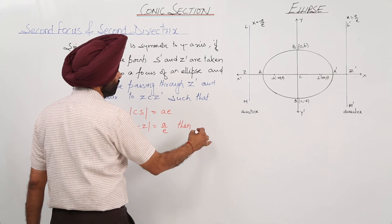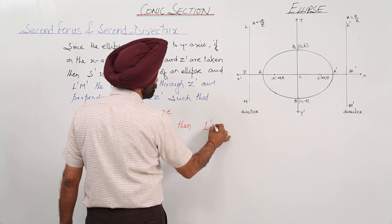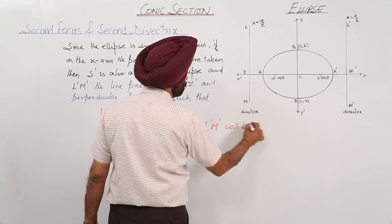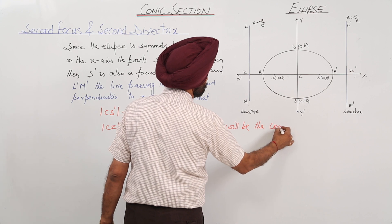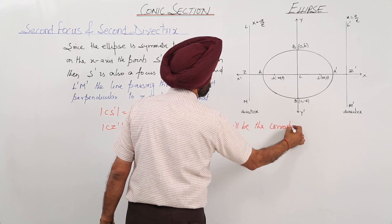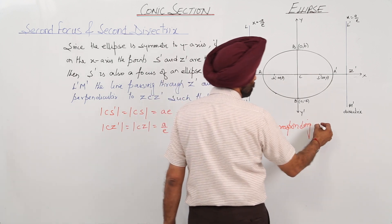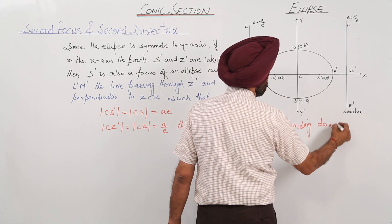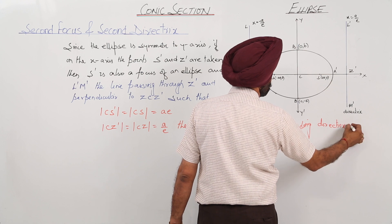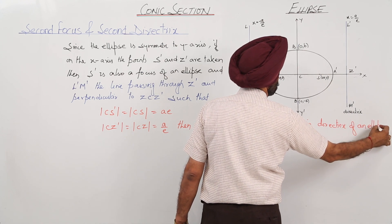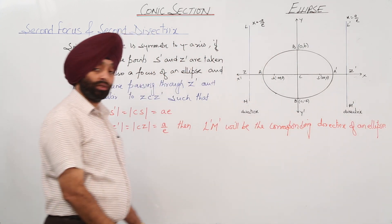Then L dash M dash will be the corresponding directrix. Is it clear?